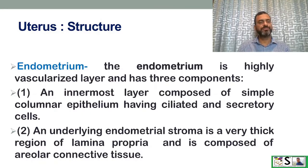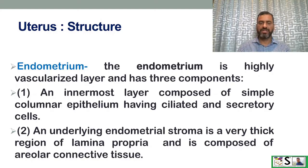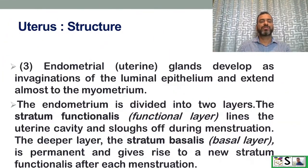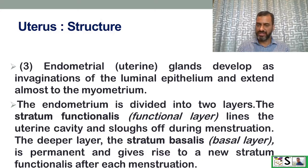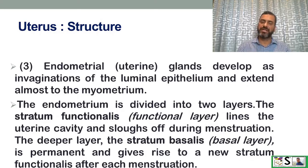The endometrium is a highly vascularized layer with three components: an innermost layer of simple columnar epithelium with ciliated and secretory cells; the endometrial stroma, a thick region of areolar connective tissue; and endometrial glands that extend almost to the myometrium. The endometrium is divided into two layers: the stratum functionalis, which lines the uterine cavity and sloughs off during menstruation, and the deeper stratum basalis, which is permanent and gives rise to a new stratum functionalis after each menstruation.